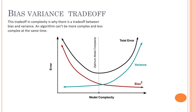If the algorithm is too simple — for example, a hypothesis with a linear function — then it may be in a high bias and low variance condition, and thus it is very much error-prone. If the algorithm fits too complex a model — for example, a hypothesis with a higher degree — then it may be on the higher variance scale, that is high variance and low bias. In the latter condition, new entries will not perform well. This is known as the trade-off between the two.